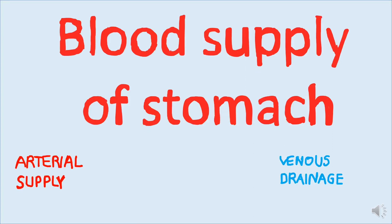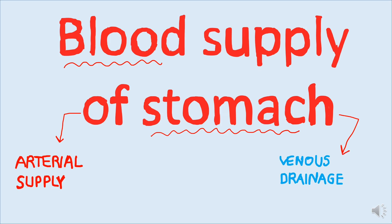Hey everyone, this is Dr. Kazi and in this video we are going to learn about the blood supply of your stomach. This topic is very important from the examination point of view. The blood supply of the stomach consists of the arterial supply as well as the venous drainage. During exams, most students remember the arterial supply but usually forget about the venous drainage, so you have to remember both.